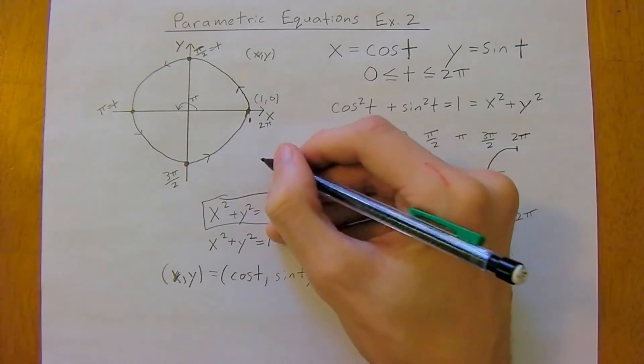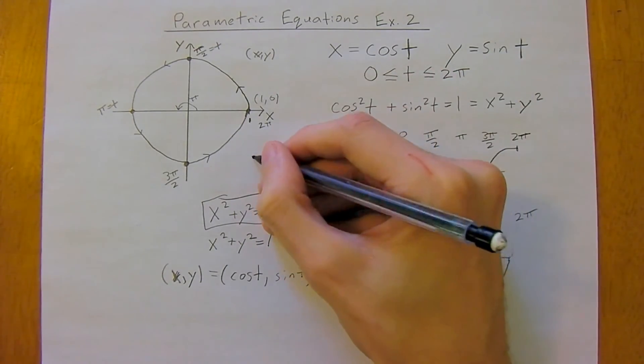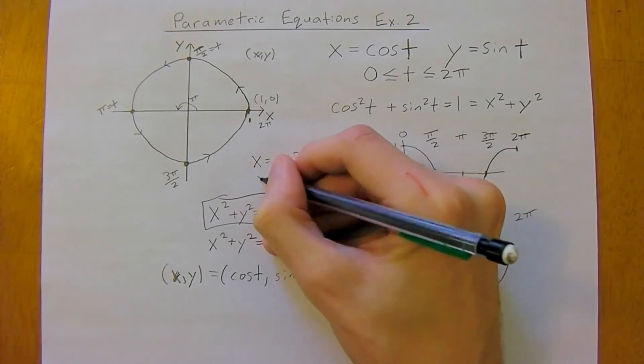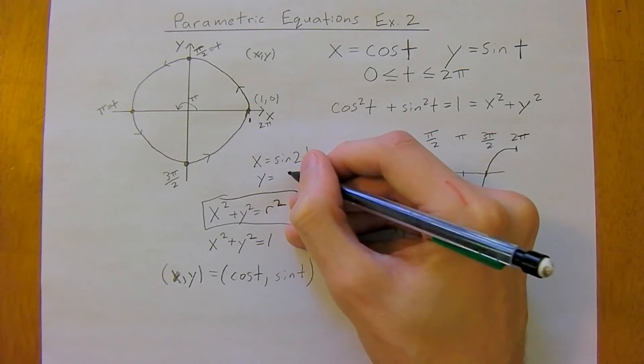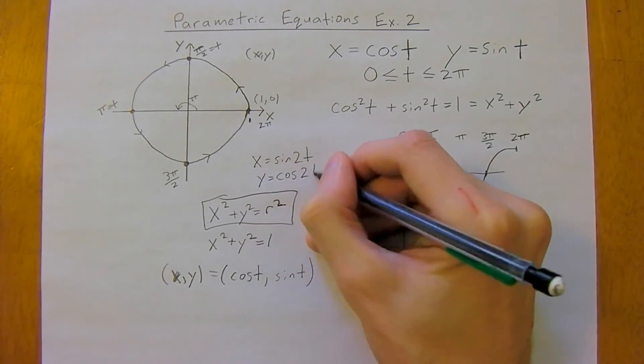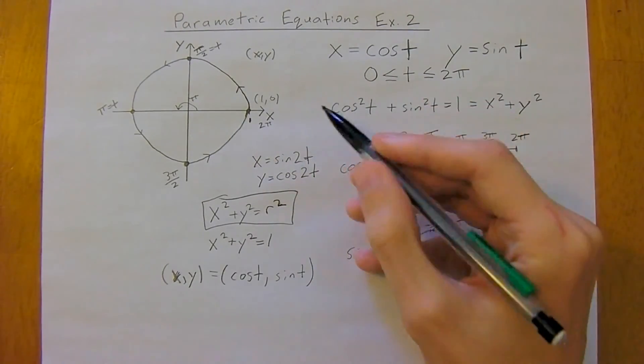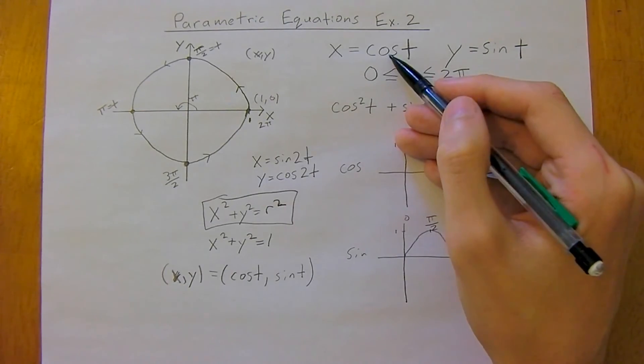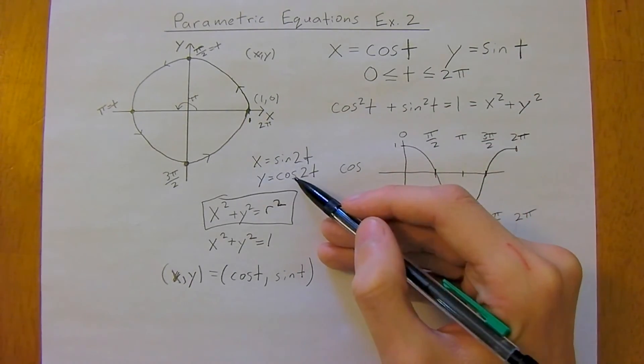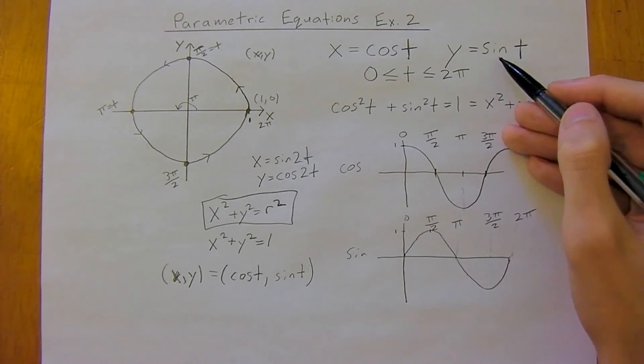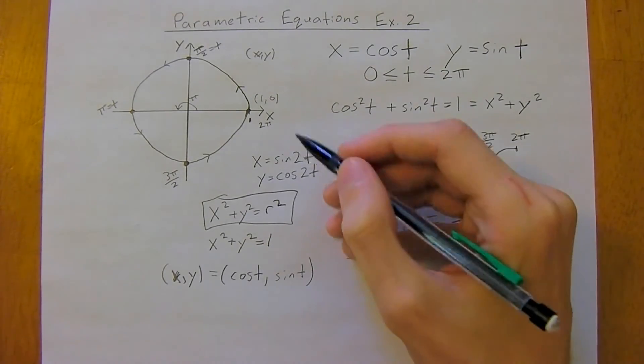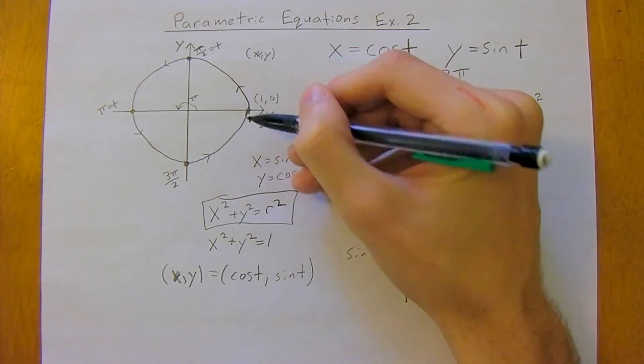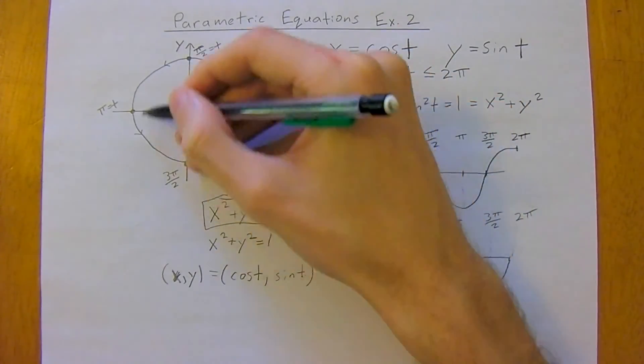And then, so, consider now if you had, say, for example, x equals sine 2t and y equals cosine 2t. Well, you'll notice we've switched, so x is now sine instead of cosine, y is now cosine instead of sine. So all this is going to do is, because we've switched sine and cosine, instead of going counter-clockwise now, we'll move in the clockwise direction.